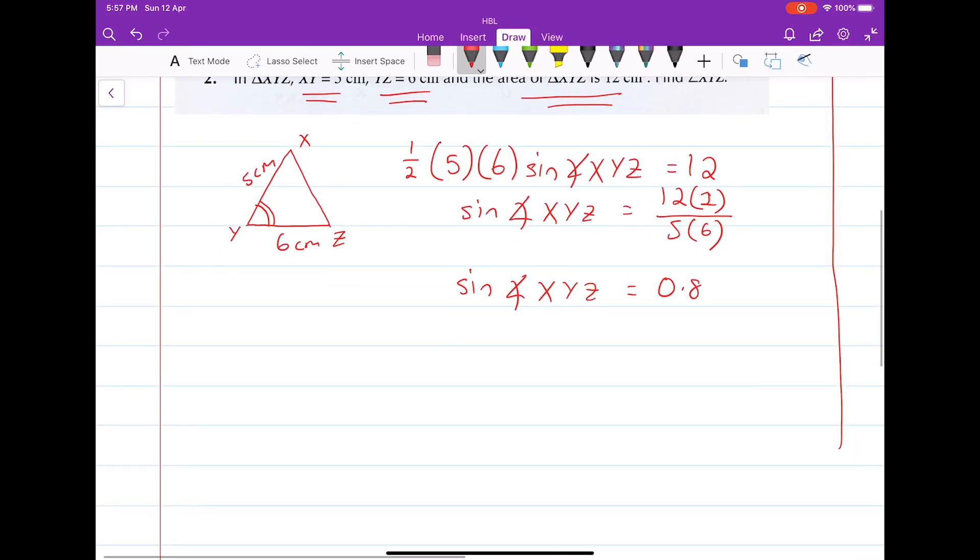So what you get is sine angle XYZ equals 24 over 30, which is 0.8. And now all we have to do is do an inverse sine to get your angle XYZ.